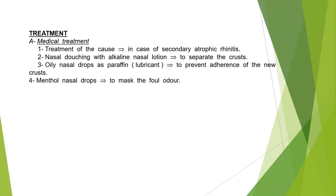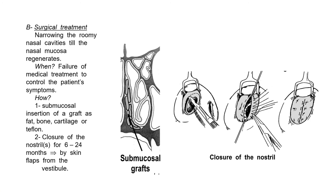Treatment of atrophic rhinitis: medically, treat the cause in secondary cases. Nasal douching with alkaline nasal lotion is important to separate the crusts. Oily nasal drops such as paraffin act as lubricants to prevent adherence of new crusts. Menthol nasal drops mask the foul odor. Surgically, narrowing of the roomy nasal cavity is done until the nasal mucosa regenerates, after failure of medical treatment. This is achieved by submucosal insertion of a graft — fat, bone, cartilage, or Teflon — or closure of the nostrils for 6 to 24 months by skin flaps from the vestibule.